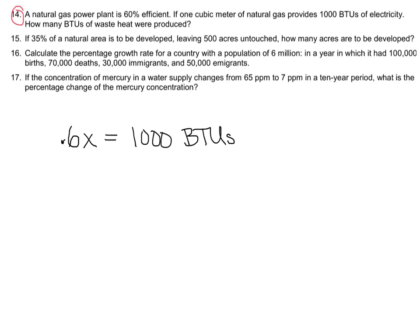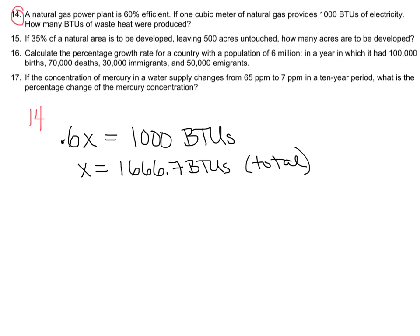So if 0.6x equals 1,000, then x equals 1,666.7 BTUs. That is our total — but that's not our answer. The question asks how many BTUs of waste heat were produced. The 1,000 is the electricity, so we subtract: 1,666.7 minus 1,000. Our answer for waste BTUs is 666.7 BTUs.